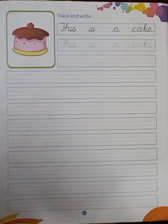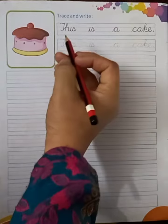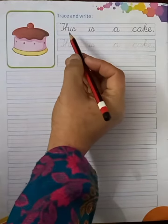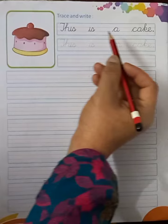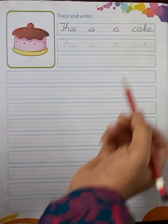Hello my dear kids, I hope you all are fine. Our today's English topic is English writing page, page number 42 from your English writing book. So let's start. This is a cake. This is a cake.